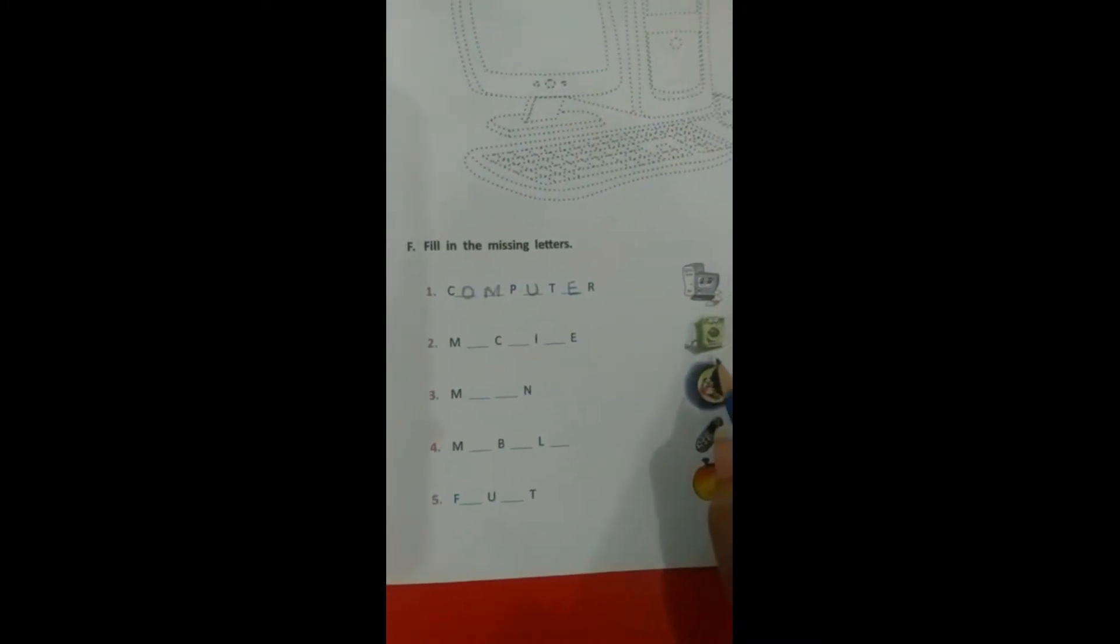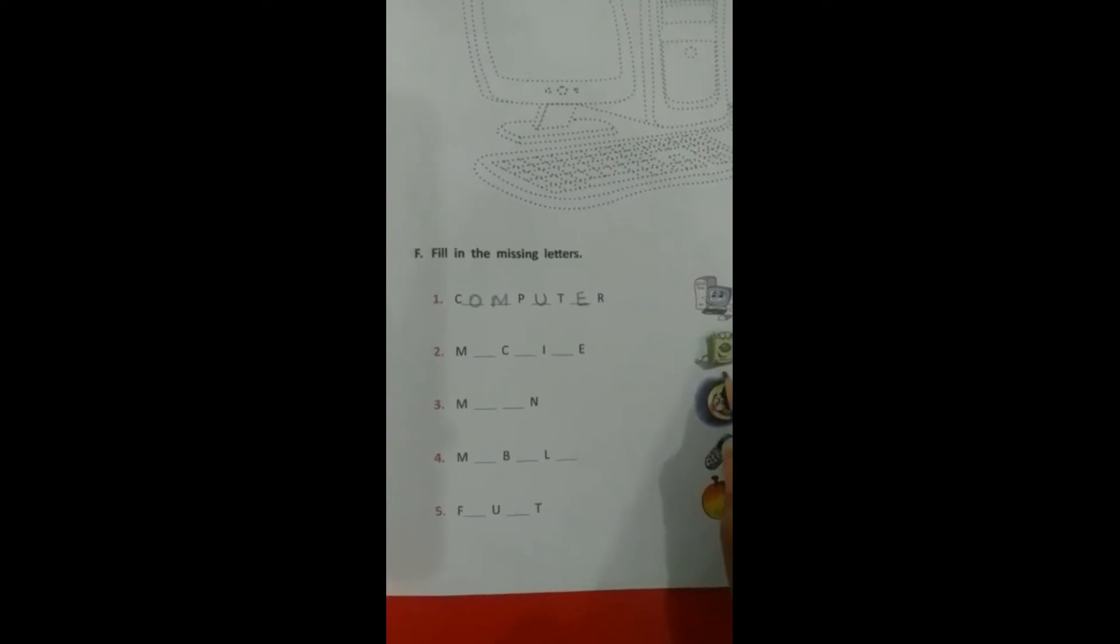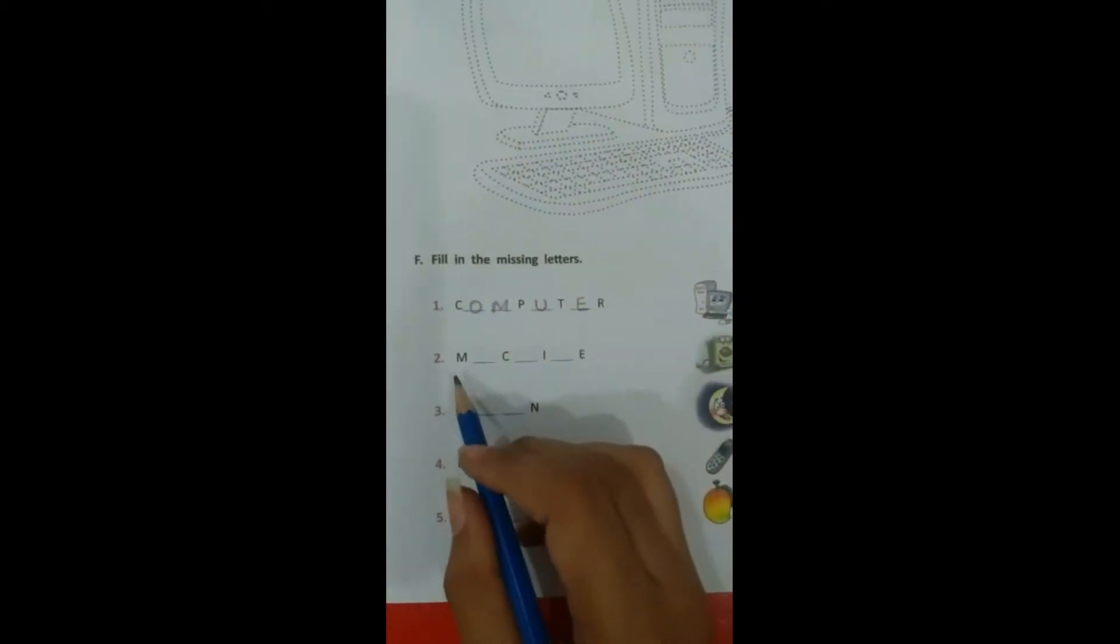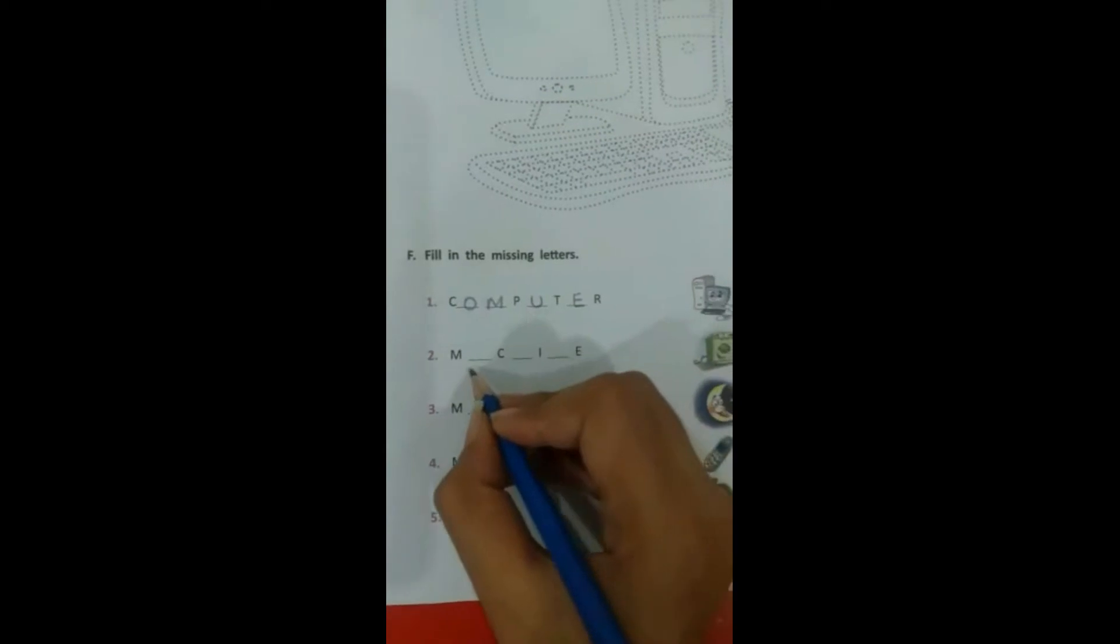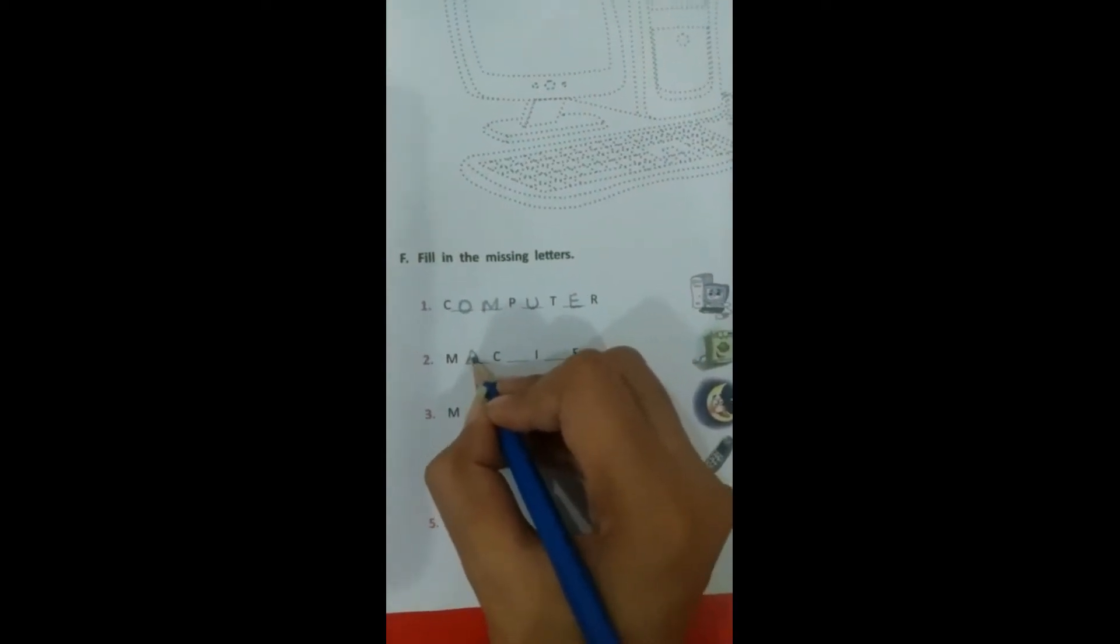Number two. Look at the picture. Machine. This is machine. First letter given is M, then A, then C.